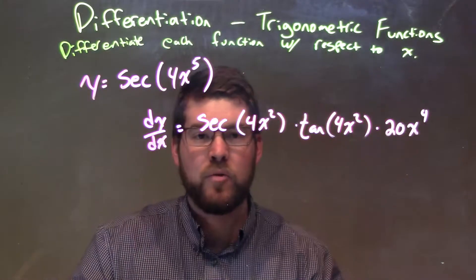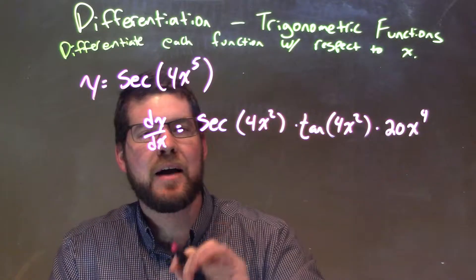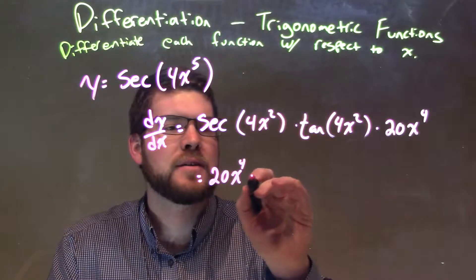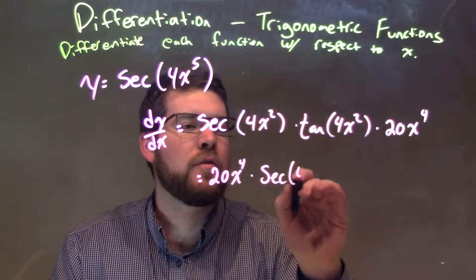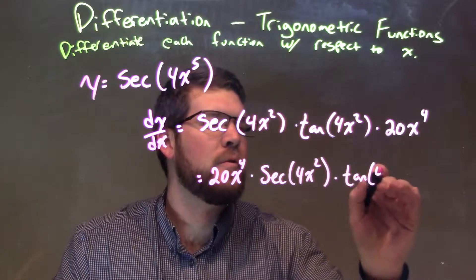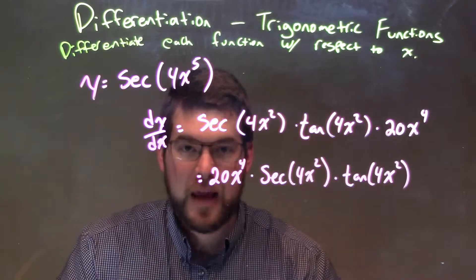And so now we've already taken the derivative. We're going to rewrite it to make it look a little nicer. We're going to put 20x to the 4th out front. So we have 20x to the 4th out front times secant of 4x squared times the tangent of 4x squared. And there we have it. Our final answer.